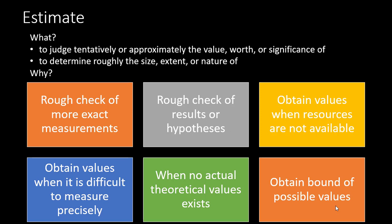When it's also difficult to obtain a real value precisely, we go for estimation. When it is difficult to measure precisely, we go for an estimate. We also use estimates when no actual theoretical value exists for a particular thing we're interested in measuring — then we can use estimation to get a rough idea of what it is. Estimation also gives us an idea of the range of possible values of a particular phenomenon — what is the upper limit and what is the lower limit — so we know our measurement should fall within that range.